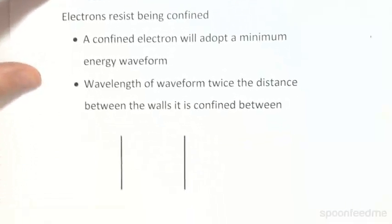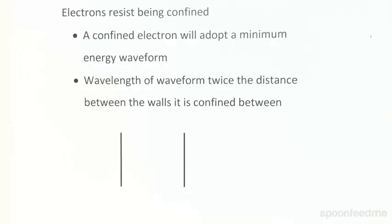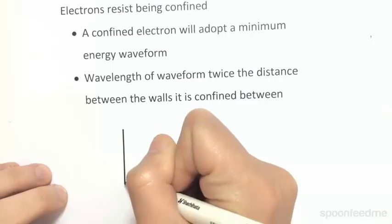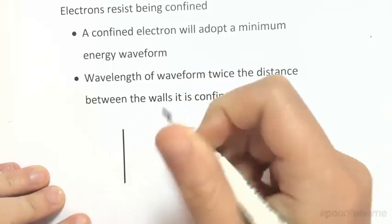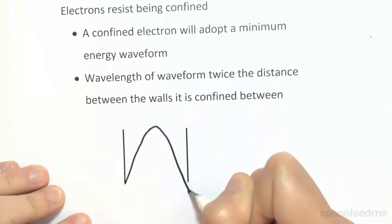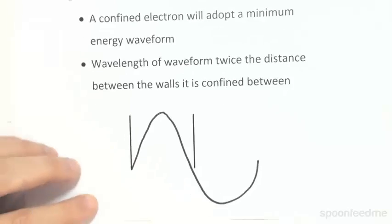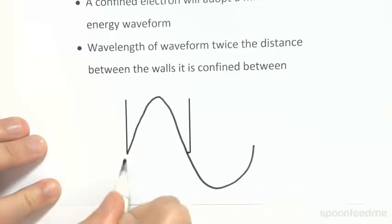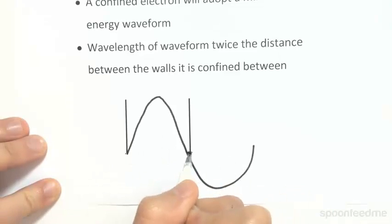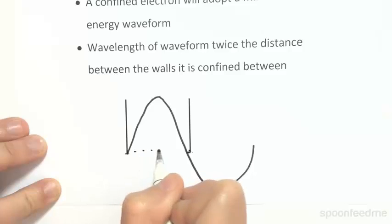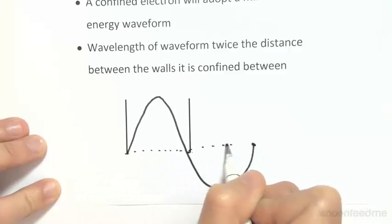I'm going to draw this out for you. If we have a wave confined between two walls, it's going to make this kind of wavelength. The smallest wavelength it can possibly be is going to be twice the distance between these two walls — where this is the wavelength here.